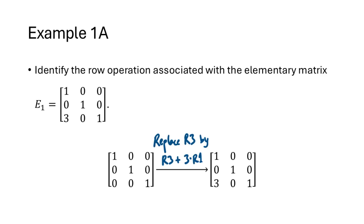What we did is a replacement operation — we replaced row 3 by row 3 plus 3 times row 1. Remember that what we're asking here is not what row operation would get this back to the identity matrix, but what row operation did we do to get this matrix starting with the identity matrix.